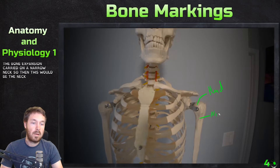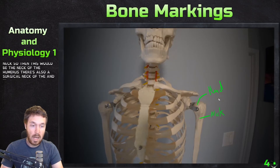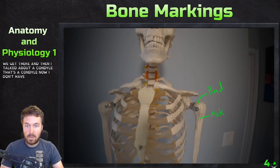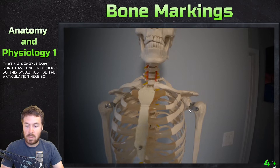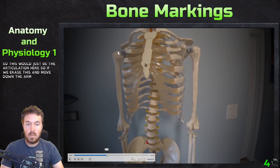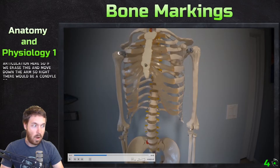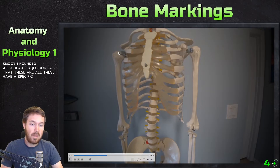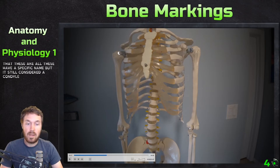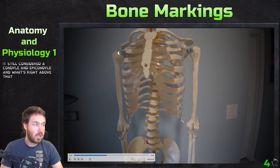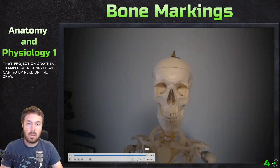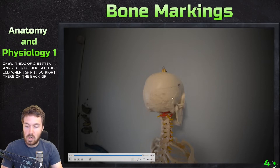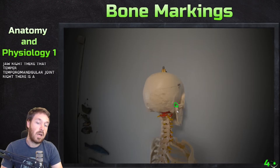There's also an anatomical neck on the humerus, but we'll cover that when we get there. Then there's the condyle — a smooth, rounded articular projection. Moving down the arm, right there would be a condyle. These have specific names; this one's called the trochlea, but it's still considered a condyle. An epicondyle is then what's right above that projection. Another example of a condyle is up here on the jaw — that temporomandibular joint is a condyle as well.